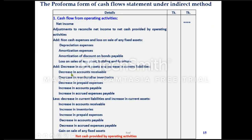Also add: decrease in current assets and increase in current liabilities. For example: decrease in accounts receivable, decrease in merchandising inventories, decrease in prepaid expenses, increase in accounts payable, increase in accrued expenses payable. Less: decrease in current liabilities and increase in current assets.